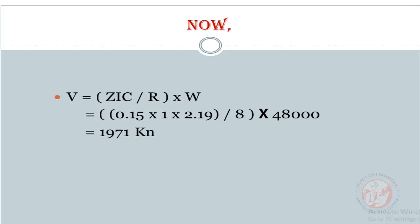Now we calculate the base shear. We know that V equals Z I C divided by R times W. This result is 1971 kilonewtons.